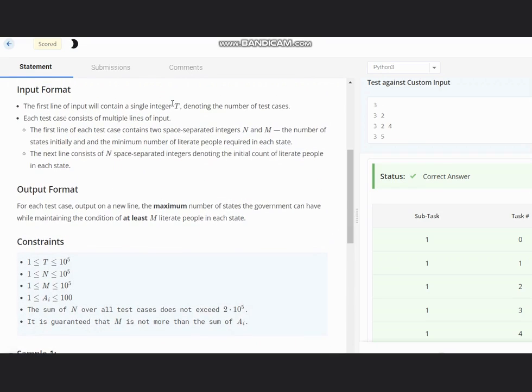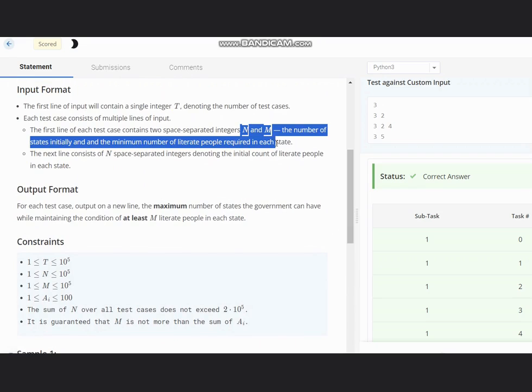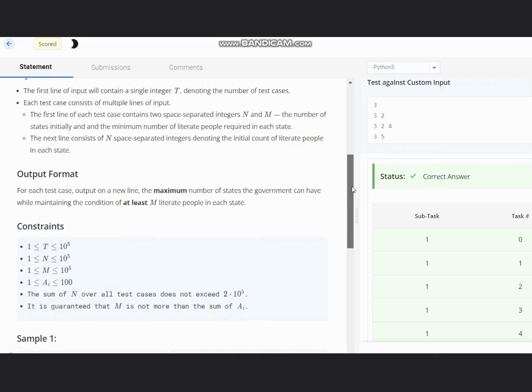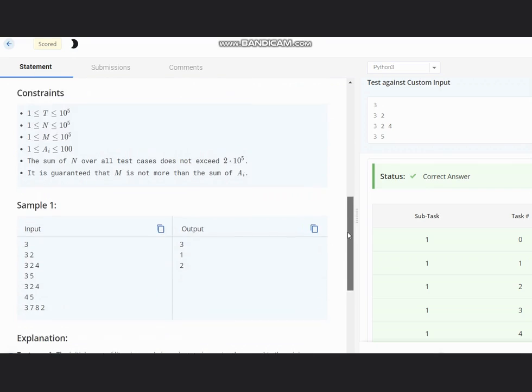So we have the input as t the number of test cases, n and m the number of states initially and minimum number of literate people required in each state. And we have the n integers which are denoting the initial count of literate people in each state.